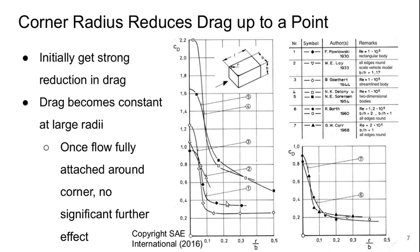But as we move to large radii relative to the thickness of the object, the drag coefficient becomes constant. Once the radius is large enough that the flow stays fully attached going around the corner, there's no real benefit to making the radius any larger.